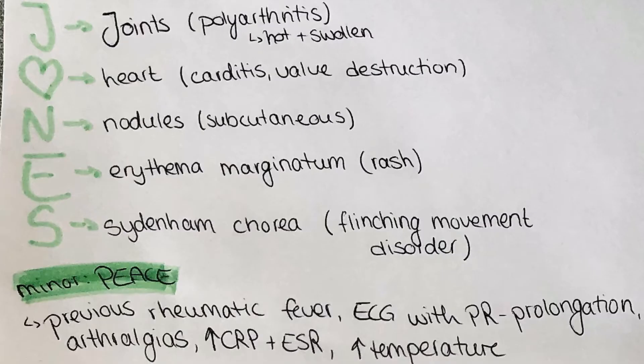The minor criteria can be remembered with the mnemonic PEACE, where P is for previous rheumatic fever, E is for ECG with PR prolongation, A is for arthralgias, C is for elevated CRP and ESR, and E is for elevated temperature. Remember: one major and two minor, or two major criteria are necessary for a clear diagnosis of rheumatic fever.